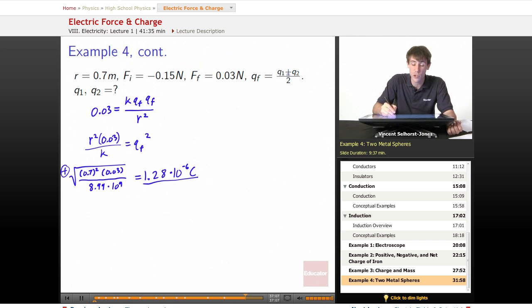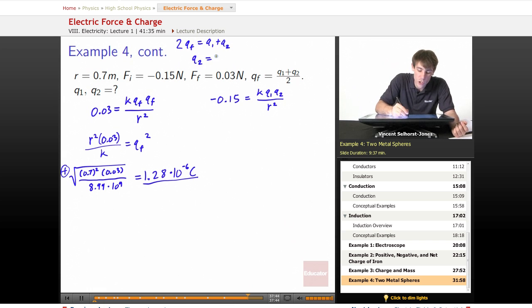Notice if QF equals Q1 plus Q2 over two, then we can solve for Q2 to plug it in. So let's look first at our initial force was negative 0.15 equals KQ1Q2 over R squared. So to solve this equation, we're going to either have to get rid of Q2 or get rid of Q1. To do that, we use the fact that we know Q final is equal to Q1 plus Q2 over two. So two Q final equals Q1 plus Q2. So we can say Q2 equals two Q final minus Q1.